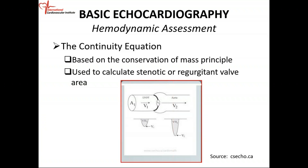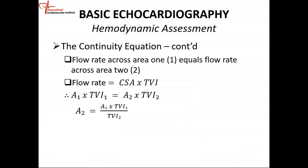Flow is equal to cross-sectional area times velocity. If you use the time velocity integral, you can see that for the larger area the TVI of velocity is less, and for the smaller area the TVI of velocity is greater, because the product of area times time velocity integral is the same anywhere along the tube. That's basically the continuity equation.